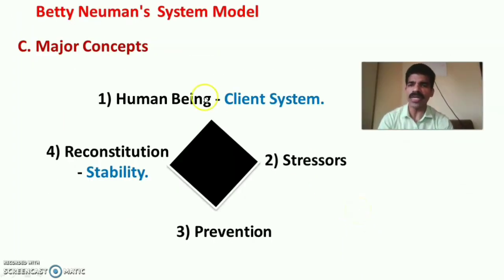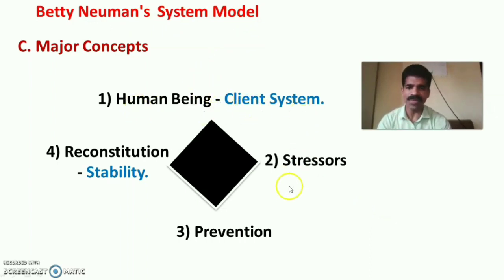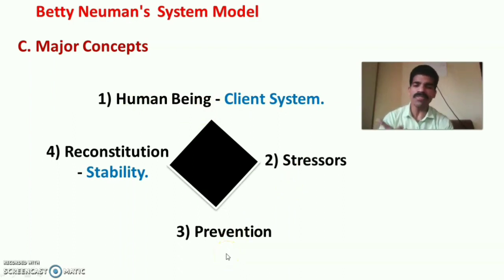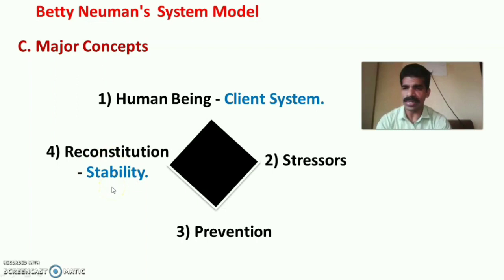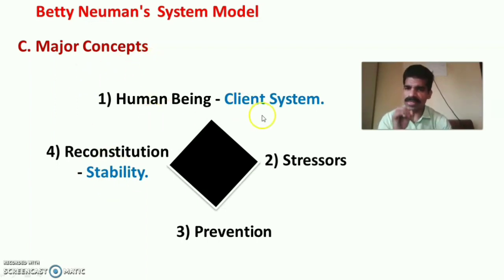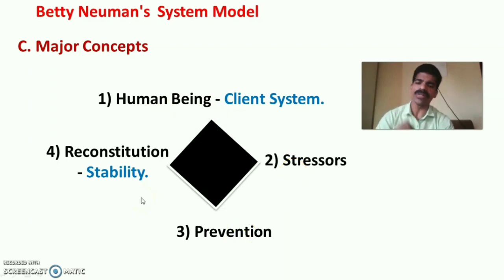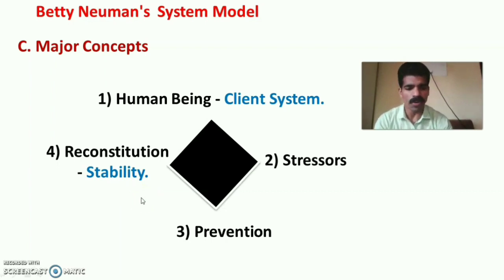There are four major concepts of the Betty Neuman System Model. The first is the human being or client system. The second is stressors. The third is prevention — the application of levels of prevention. The fourth is maintaining reconstitution, stabilization, or stability of the client. Let us discuss each major concept in detail.